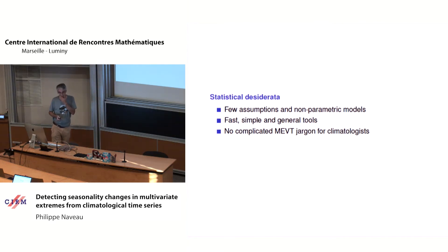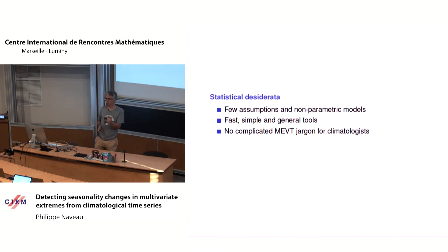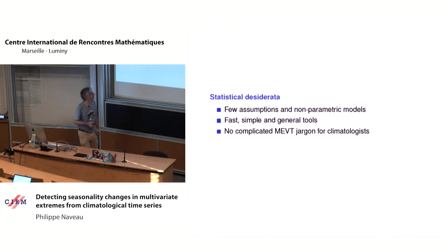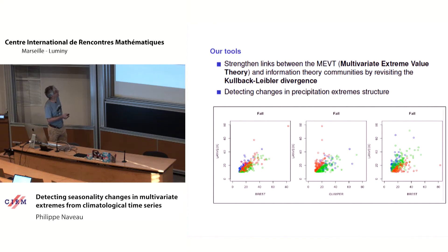I want very few assumptions. I want it to be fast and simple. But also, what I would like — and this may be different from some talks at extremes — is something accessible, because I work in a climate research lab. If I speak with my colleagues about an extreme stable process, they would say, 'Oh, great name, but what is it?' So I want to have very little multivariate extreme value jargon. I want a tool which is simple and already used by other people.